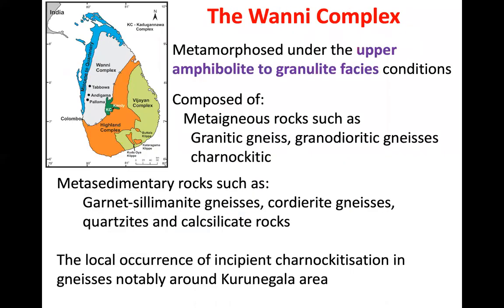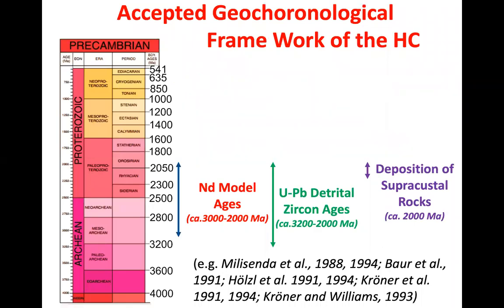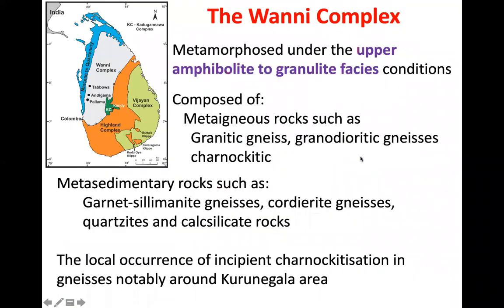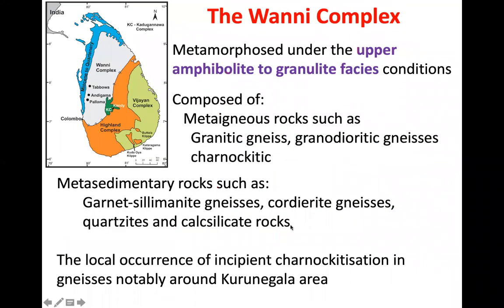Moving on to the Wanni Complex — the second biggest complex. Its metamorphic conditions range from upper amphibolite to granulite facies. Upper amphibolite facies means above about 600°C. So the Wanni Complex rocks vary in composition from upper amphibolite to granulite facies conditions.